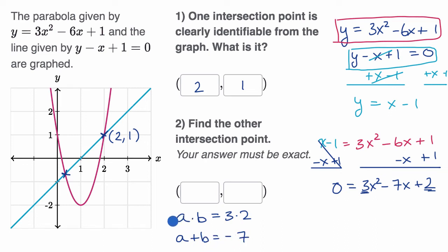Actually, negative six and negative one work. So what I can do is I can rewrite this whole thing as zero equals three x squared. And then, instead of negative seven x, I can write negative six x and minus x. And then I have my plus two. I'm just factoring by grouping.